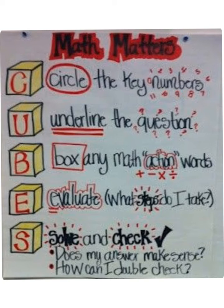The next step is to underline the question that it is asking. Then, box any math action words. Anything that tells us what operation that we're going to be using, whether addition, subtraction, multiplication, or division. The next one is to evaluate. What steps do I take? What is it that I need to do to solve this problem? And then, the last step is to solve and check. Does my answer make sense, and how can I double check?